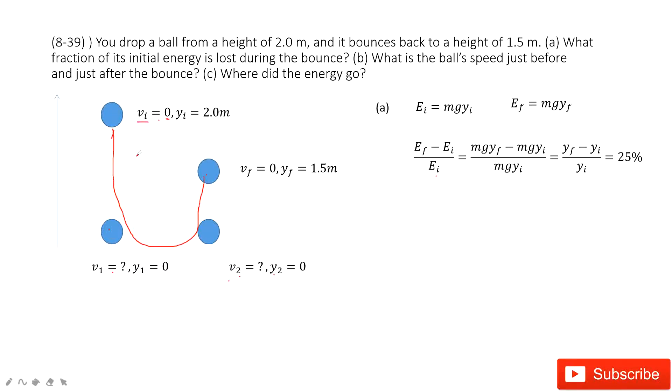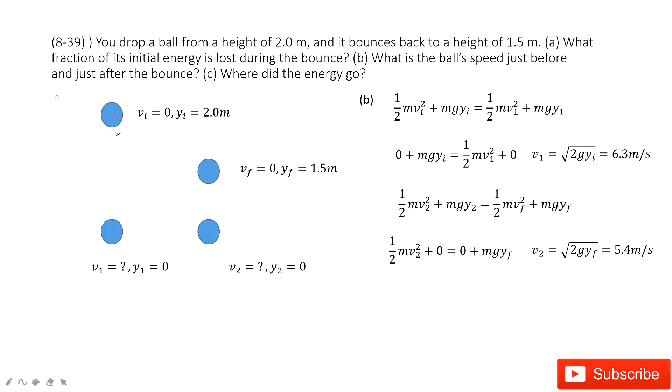We can consider the energy from V_initial to V1. This energy is conserved because only gravity does the work. The initial energy is (1/2)m(v_initial)² + mgy_initial, which equals (1/2)m(v1)². Inputting the known quantities v_initial and y1, we get that v1 is 6.3 meters per second.